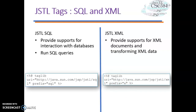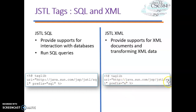Let's look at JSTL for SQL and XML. The SQL library provides support for interaction with databases and running SQL queries. The XML library provides support for XML documents and transforming XML data into display format. For the SQL taglib, you use the SQL URI and prefix SQL in your JSP code. For XML, you use the XML URI at the end and prefix X.